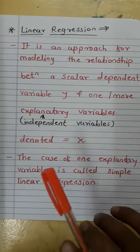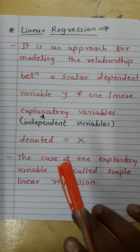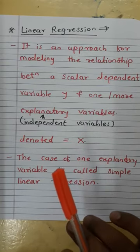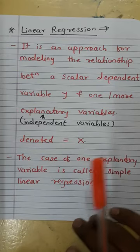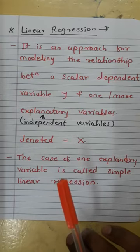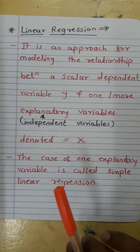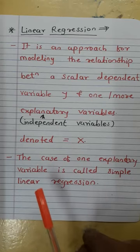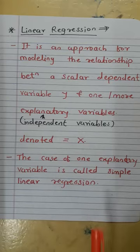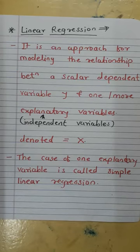Linear regression is an approach for modeling the relationship between a scalar dependent variable y and one or more explanatory variables, denoted x. The case of one explanatory variable — one independent variable — is called simple linear regression.